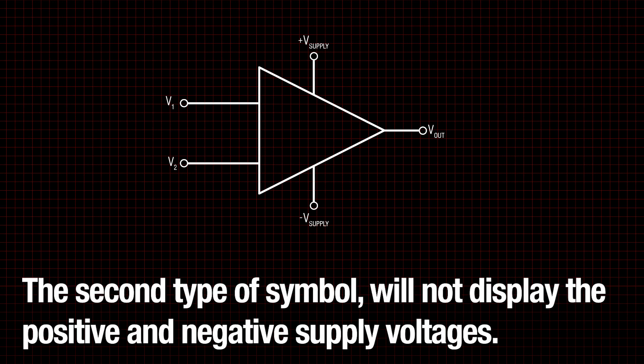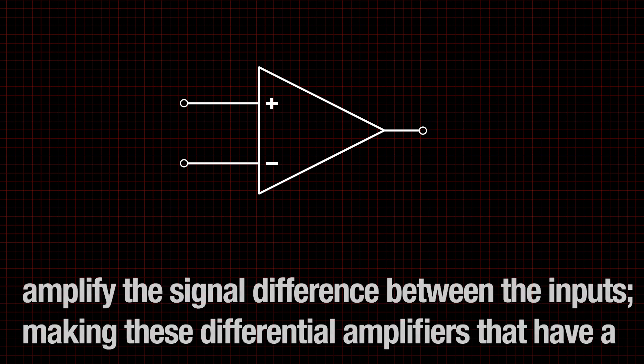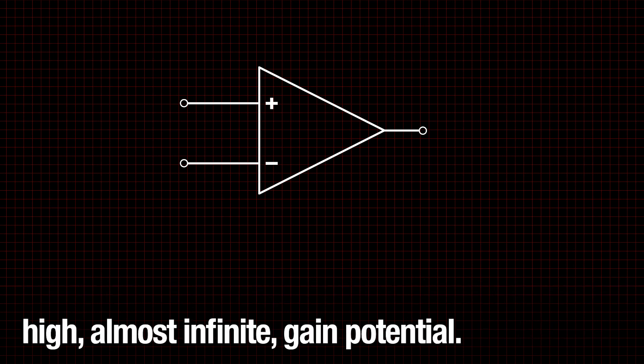The second type of symbol that you may come across will not display the positive and negative supply voltages. Op-amps function by receiving a non-inverting and an inverting input. Then in an ideal scenario, amplify the signal difference between the inputs, making these differential amplifiers that have a high, almost infinite gain potential.